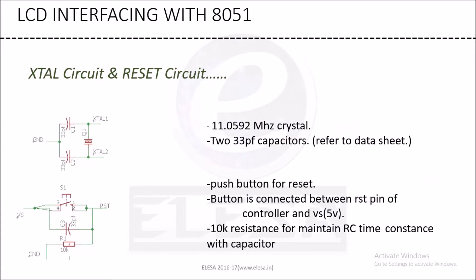Next is the crystal circuit and reset circuit. An 11.0592 MHz crystal is connected with two capacitors of value 33 pF. The values of the capacitors are selected typically from the datasheet, so you can refer to the datasheet. In the reset circuit, a push button is connected for reset — connected between the reset pin and the controller, between the reset pin of the controller and the 5V supply. A 10K resistor is connected with a capacitor for maintaining the RC time constant, which is helpful for resetting the microcontroller for a particular duration.